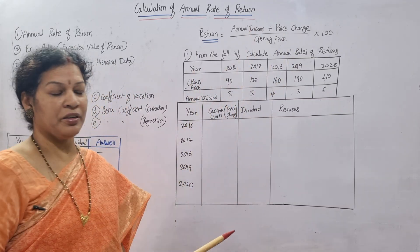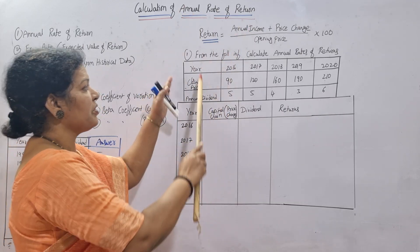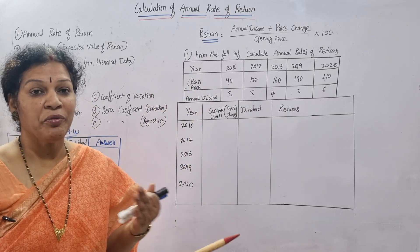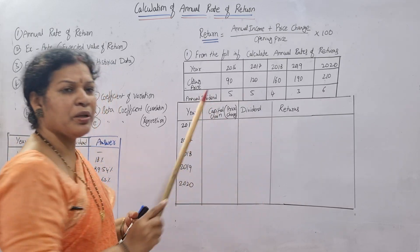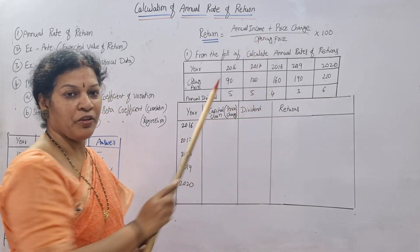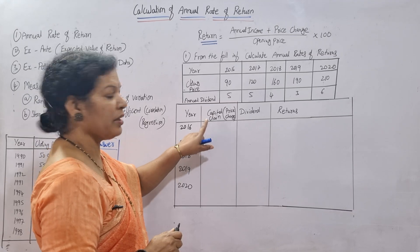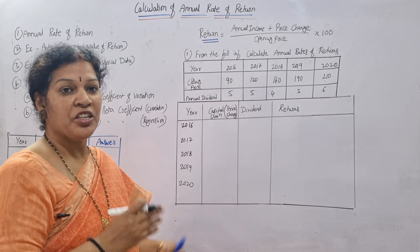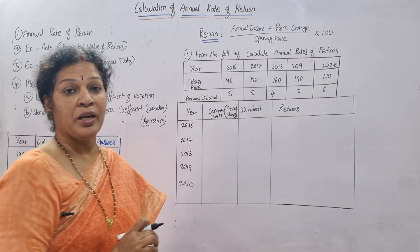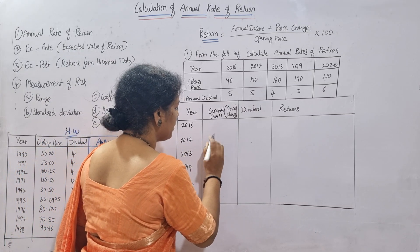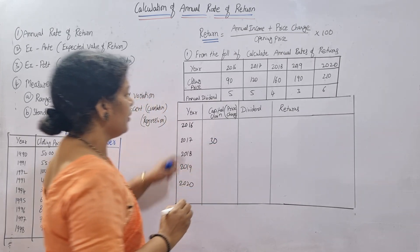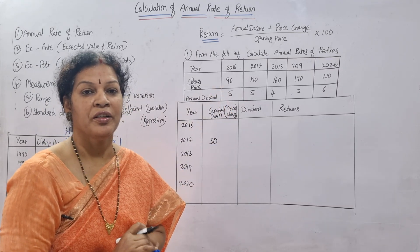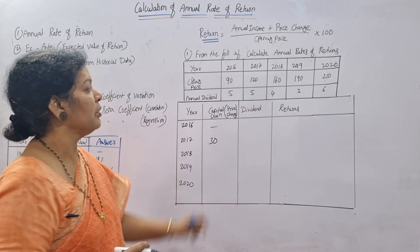The table has year, closing price, and annual dividend (annual income). We also calculate a price change column. For 2017, price change = 120 − 90 = 30. For 2016 (first year), there is no prior data to compare with 2015, so we keep it as nil. For 2018: 160 − 120 = 40.